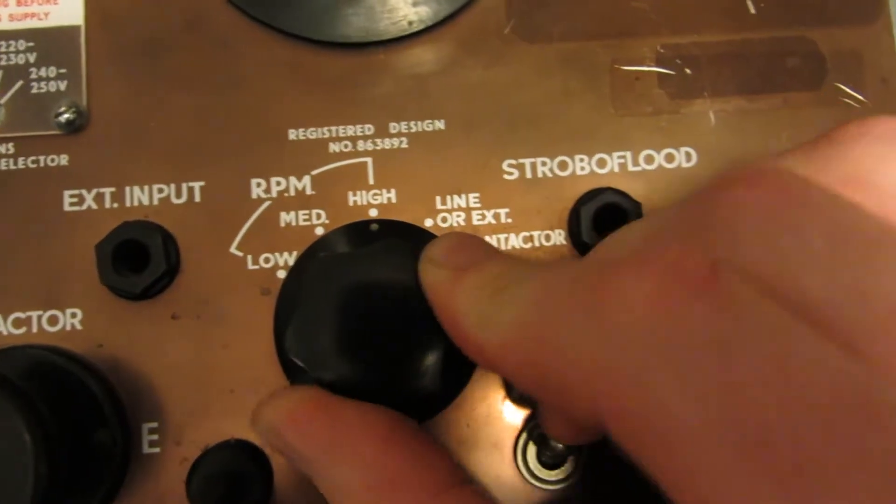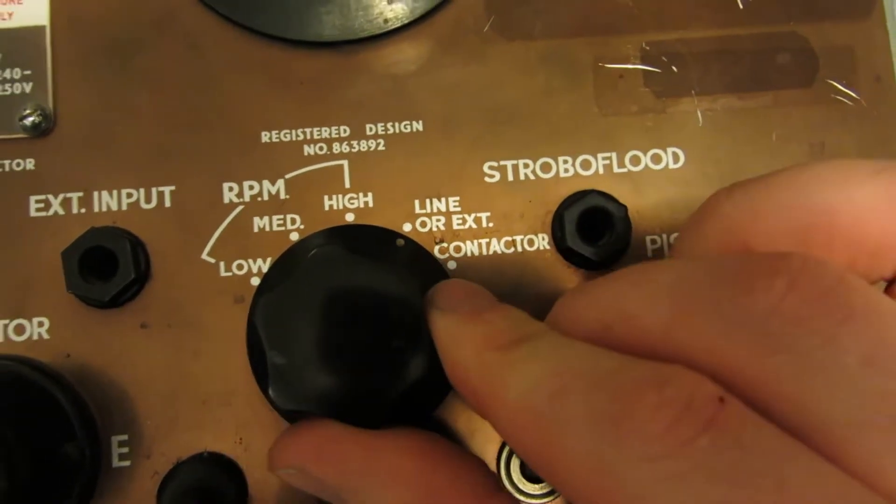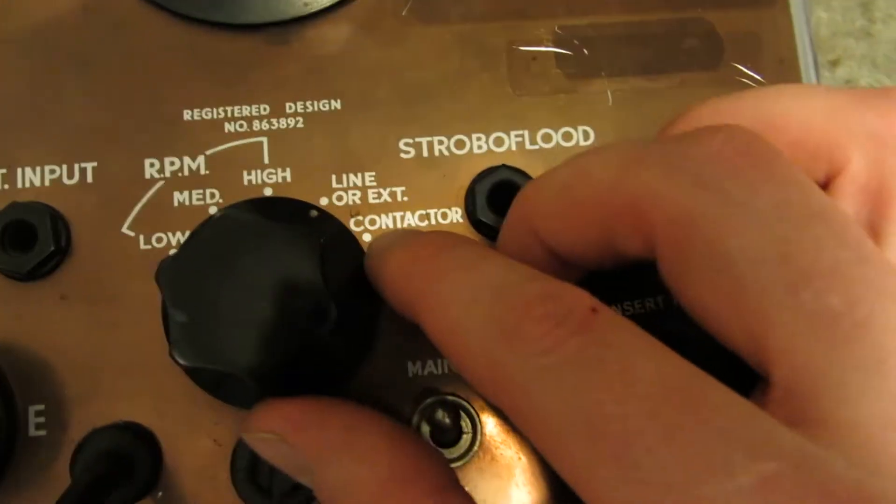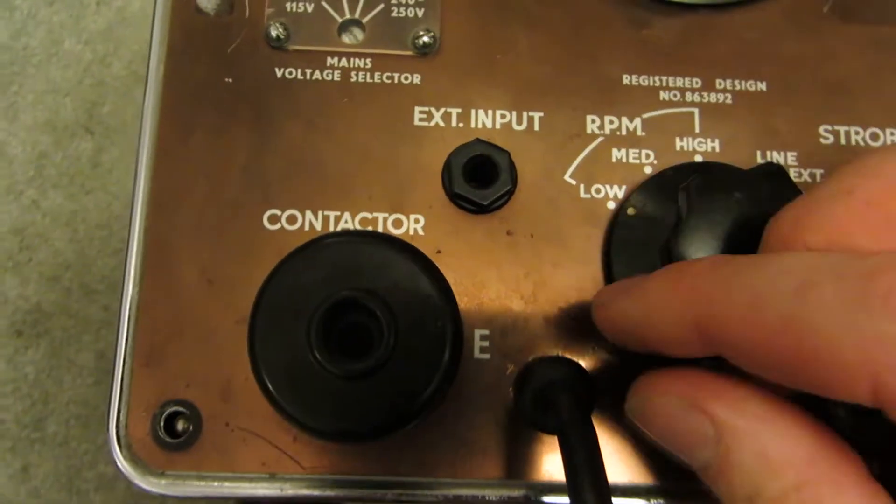That is controlled by this here. You've got your low, medium, high, and you've got your line that will make it strobe at 60 or 50 cycles, and you have a contactor.